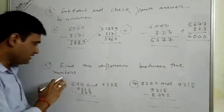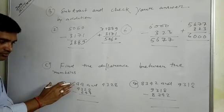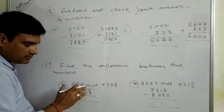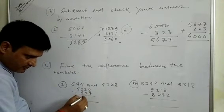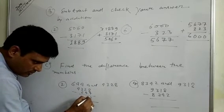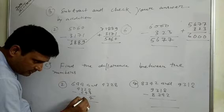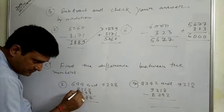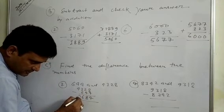6144 and 4328. 8 minus 4 is 4. 12 minus 4 is 8. Wait, we need to borrow: 14 minus 8 is 6, 11 minus 3 is 8. No wait: 4 minus 8 requires borrowing. 14 minus 8 is 6, 13 minus 2 is... let me recalculate: 12 minus 6 is 6. Answer: 1816.